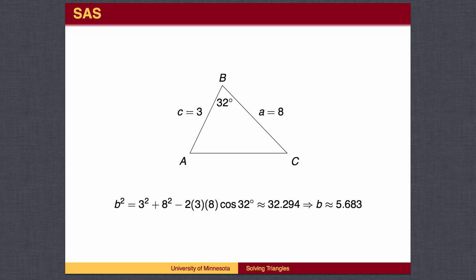When given two sides and the included angle, use the Law of Cosines to find the third side. Then use either the Law of Cosines or Law of Sines to find the remaining angles, with one bit of caution.